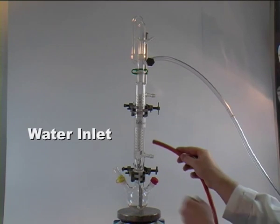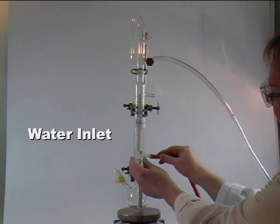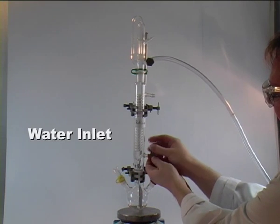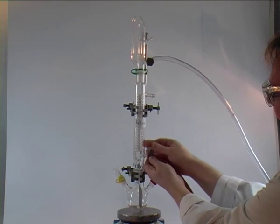Next step is the water inlet to the reflux condenser. Remember that the bottom one is the inlet. Again, we connect it to the line and secure it with a jubilee clip.